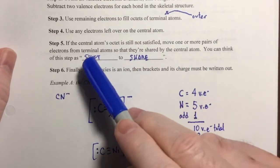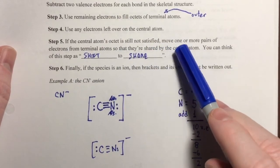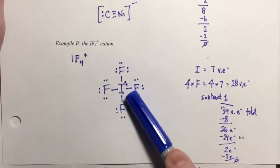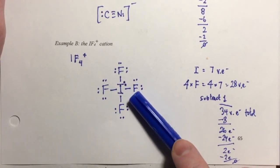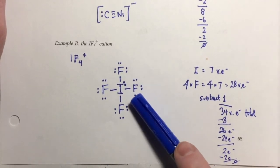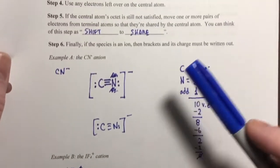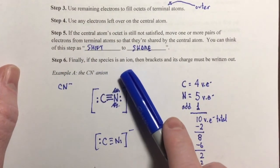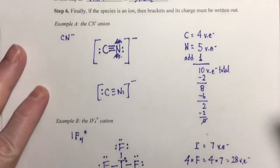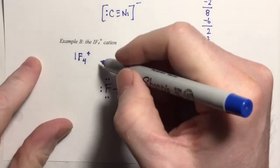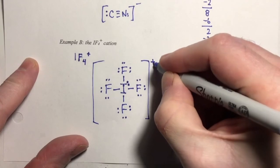Step five: if the central atom's octet is still not satisfied — we don't need to do this here, because iodine is more than octet satisfied with ten electrons. So we don't need to shift to share any electron pairs to make double or triple bonds. Moving on to step six: if the species is an ion, then brackets and the charge must be written out. This is indeed an ion.